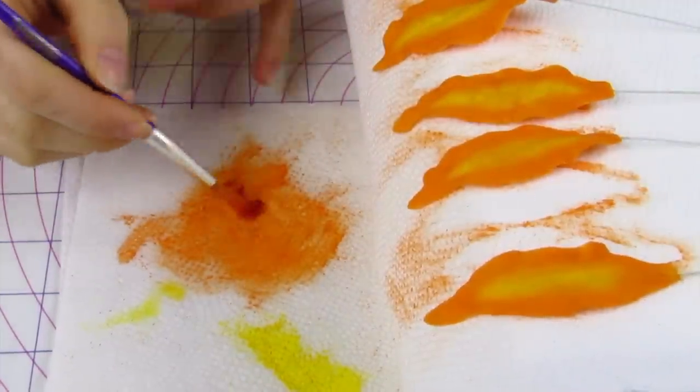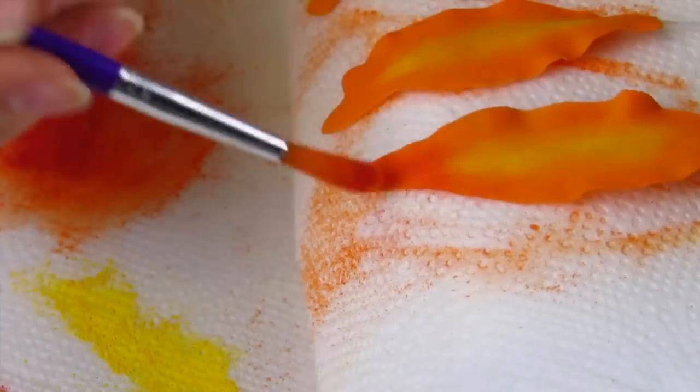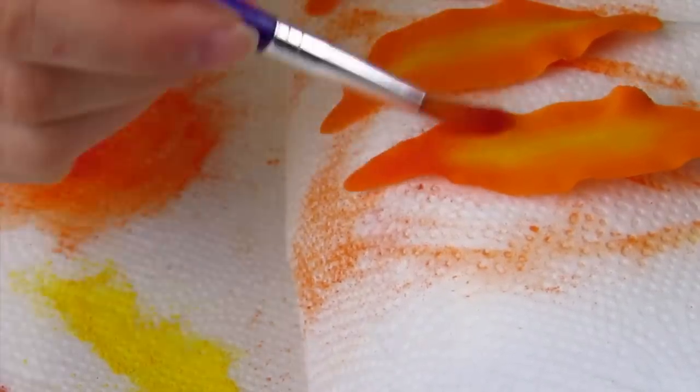So I'm going to take a little bit of red color dust as well. Mix that with my orange and then just give it kind of a hit of red on the ends of the petals.